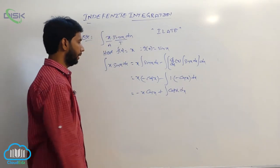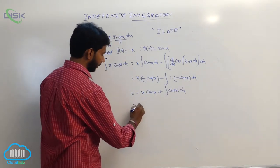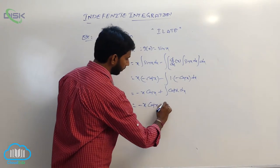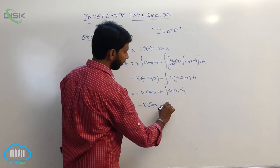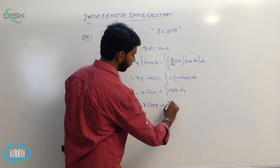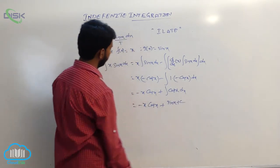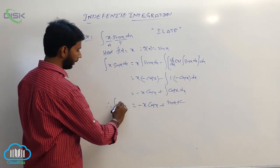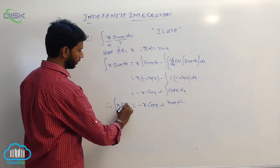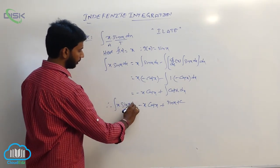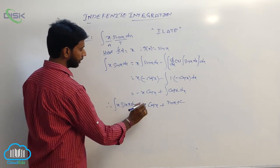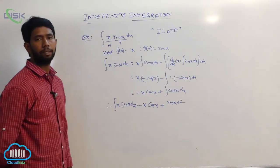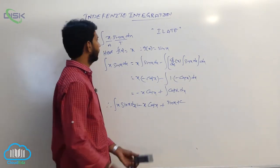That is −x·cos(x) plus integral of cos(x) dx, which gives −x·cos(x) plus sin(x) plus constant. So the value of integral of x·sin(x) dx is equal to −x·cos(x) + sin(x) + C.